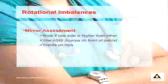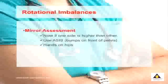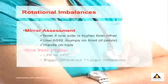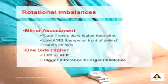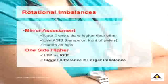What you'll note is that one side of your pelvis is higher than the other, and this creates what's called a rotational imbalance. If your left side is higher you have what's called an LFP, and if the right side is higher you have an RFP. The bigger the height change, the bigger the imbalance occurring in your spine.